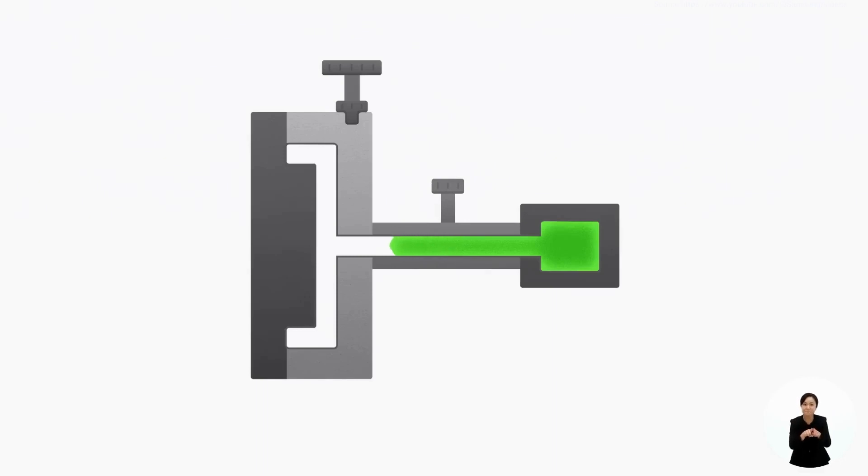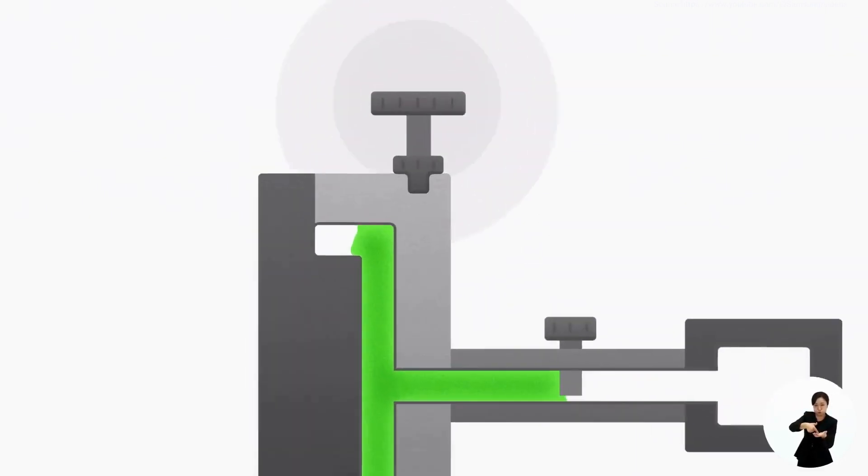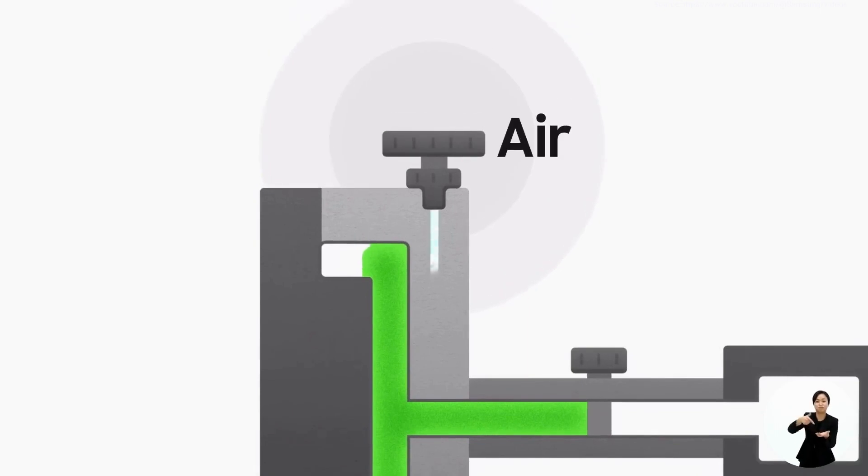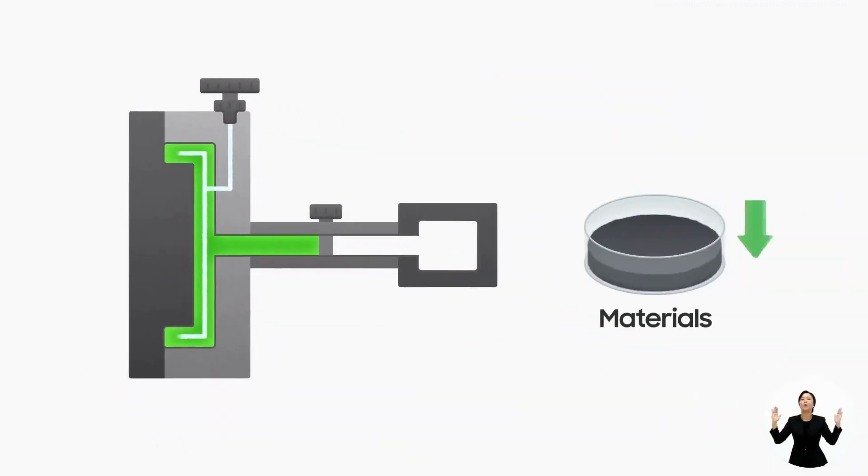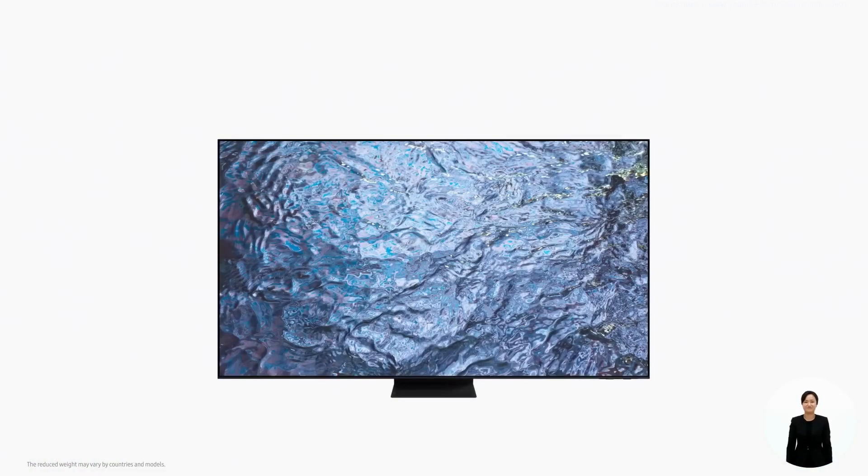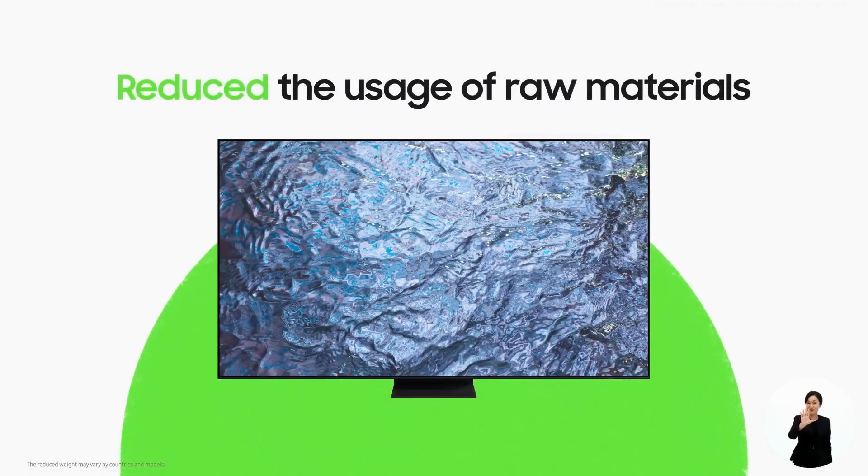We also developed injection technology that can reduce the usage of raw material without altering the quality of the product. It injects air into the mold to partially replace resin, eliminating the need to inject the materials as tightly as before. This has helped reduce the weight of our 65-inch TVs by one kilogram.